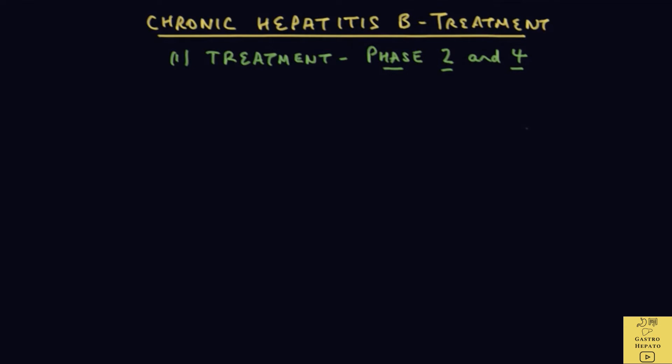If left untreated, the liver damage can result in scarring or fibrosis and this goes on to hardening of the liver or cirrhosis. It is estimated that 1 in 6 chronic hepatitis B patients go on to develop cirrhosis, which can progress to liver failure and cancer of the liver. The different phases of chronic hepatitis B are discussed in detail in video 2.